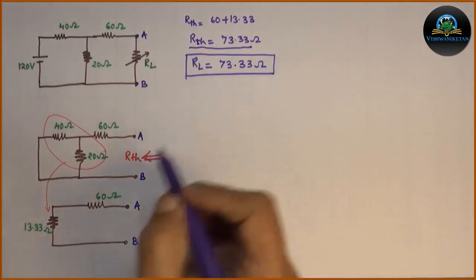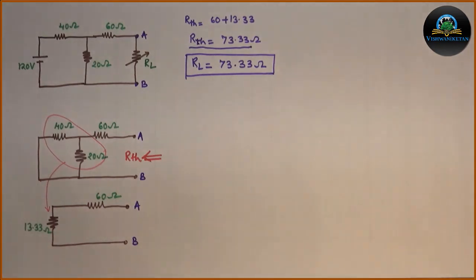This is answer of first part. Then we have to calculate Pmax. For the formula for calculation of Pmax, we have to calculate VTH. Let us calculate VTH. For calculation of VTH, we will redraw the circuit.